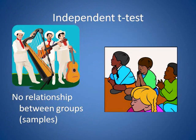On to the t-test. A t-test is used to compare two groups and to determine if the two groups are significantly different. An independent t-test is used if the two groups are not related — this is the apples and oranges comparison. Remember, this refers to the samples, not characteristics of the samples.